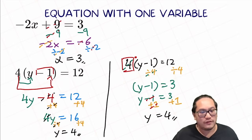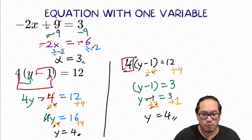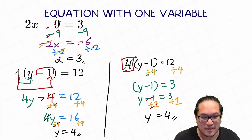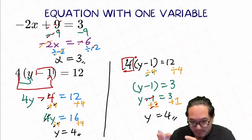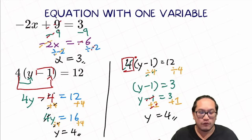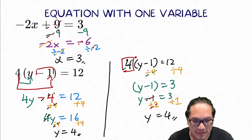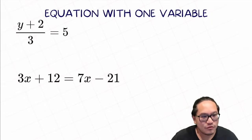Preference is whatever you like — whatever makes you feel more confident is the correct way, but they both work. It's just using a slightly different concept: one is the distribution method, the other is picking out whatever you can isolate immediately. So let's practice a little bit more — practice makes perfect. The next one: y plus 2 over 3 equal to 5.